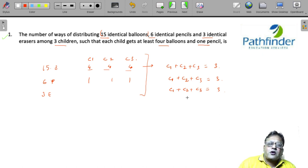Now how do you go about solving these questions? The question boils down to distributing 3 identical balloons, 3 identical pencils, and 3 identical erasers among 3 children.